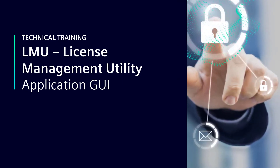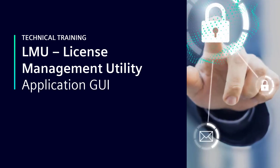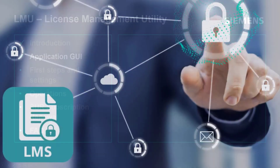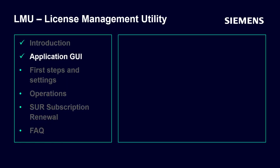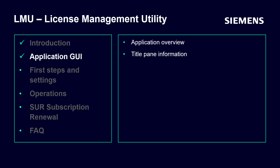LMU — Application Graphical User Interface. In this session we would like to explain the most important elements and views of the Application Graphical User Interface, starting first with the Application Overview and explaining the different information in the Title Pane View. In this part we will show how the User Interface of the tool is structured and what the individual views mean.